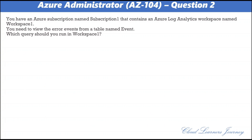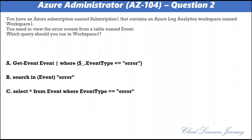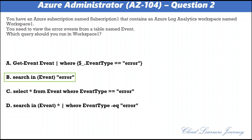Question number two. You have an Azure subscription. You need to view the error events from a table named Event. Which query should you run in workspace one? The options are: A) get event where EventType equal to error; B) search in Event with error; C) select star from Event where EventType equal to error; D) search in Event star pipeline where EventType equal to error. The correct option is B: search in Event error. To search a term in a specific table, add the table name just after the search operator.